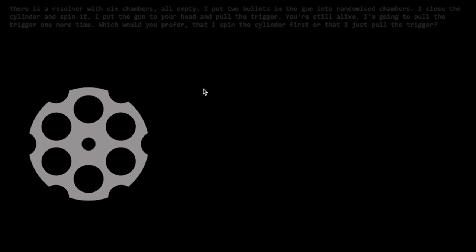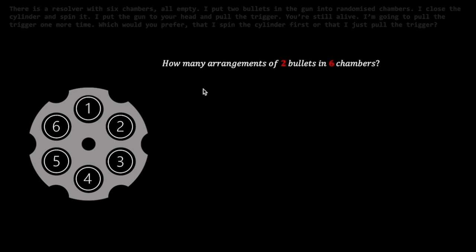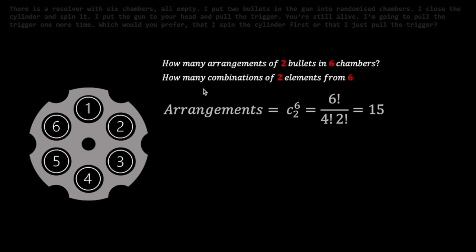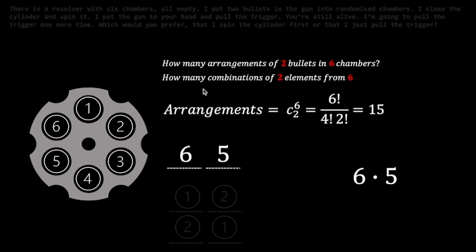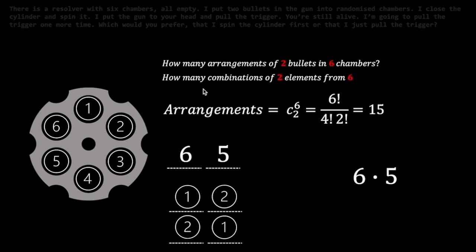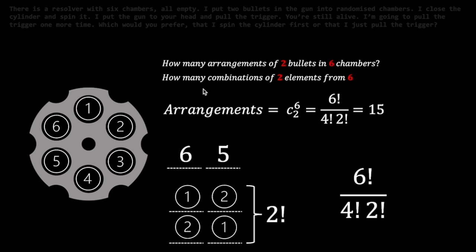Because the chambers are randomized, let's number the chambers for clarity. Consider how many arrangements of two bullets in six chambers there are, or how many combinations of two elements from six we can choose. This would be 6 choose 2, giving 15 combinations. If we pick two chambers from 6, we have 6 options followed by 5, giving 6 times 5 options. Since each option has identical combinations, we divide by 2, arriving at the formula above.